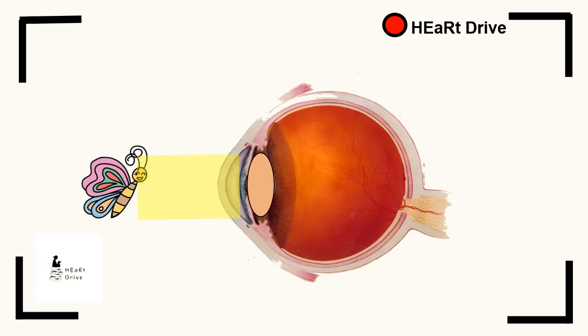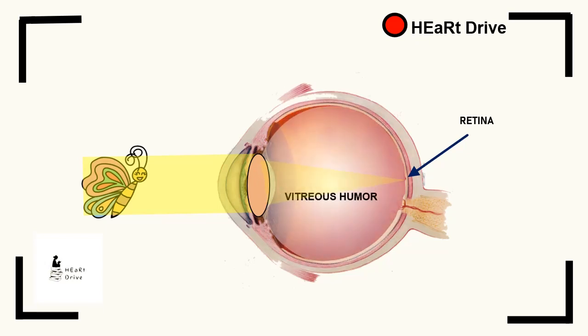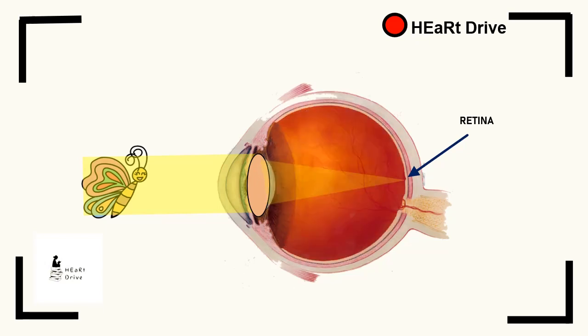The light enters the pupil to reach the lens. The lens can change in thickness to bend the light, which will focus it onto the retina at the back of the eye. On the way to the retina, the light passes through a thick clear fluid called the vitreous humor. The vitreous humor fills the eyeball and helps maintain its round shape.